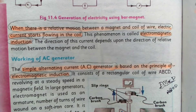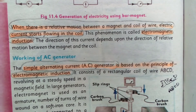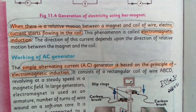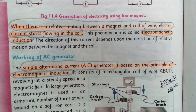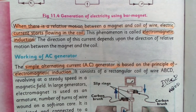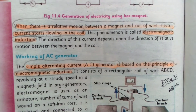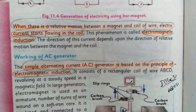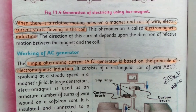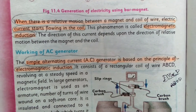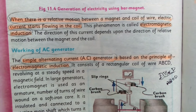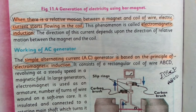What is called electromagnetic induction? When there is a relative motion between a magnet and a coil of wire, this phenomenon is called electromagnetic induction. The simple alternating current (AC) generator is based on the principle of electromagnetic induction.